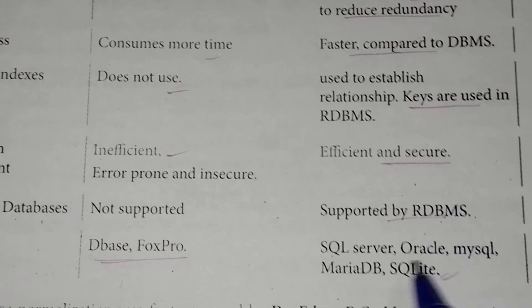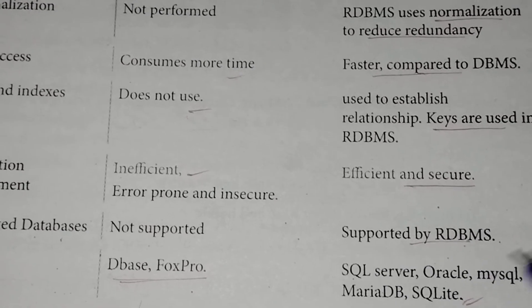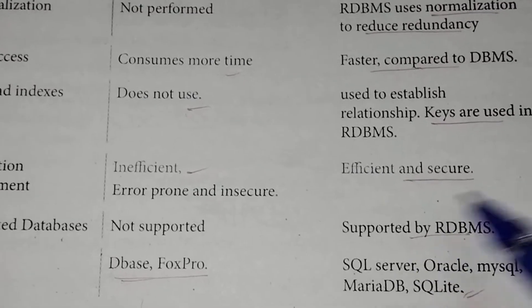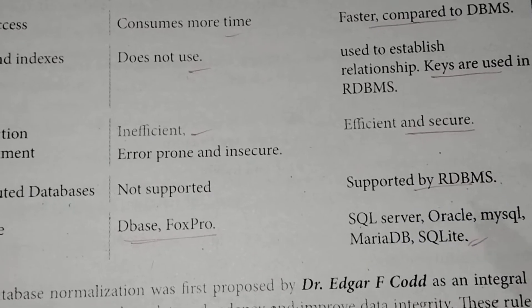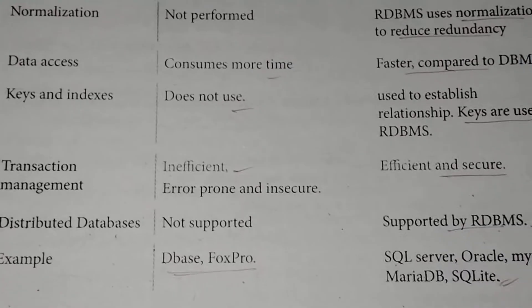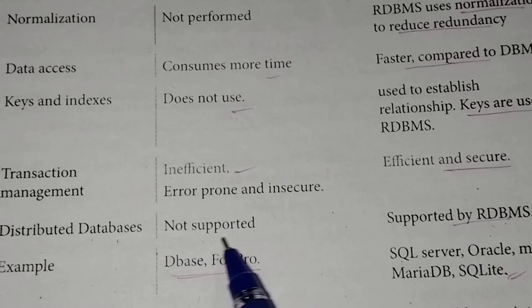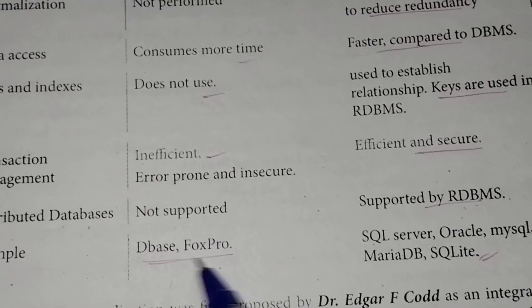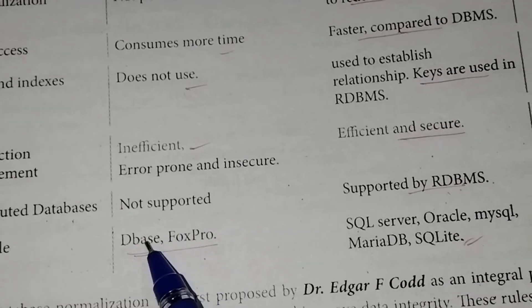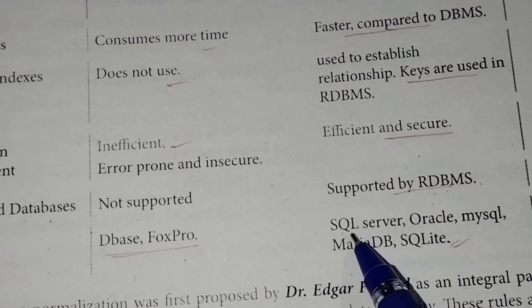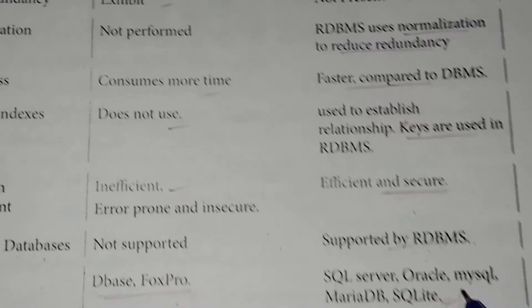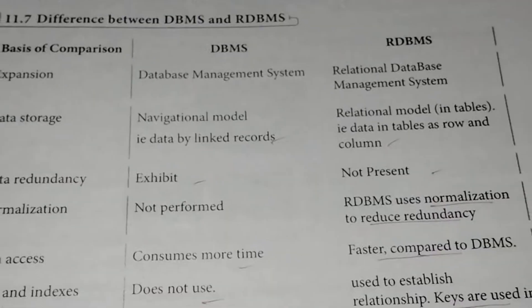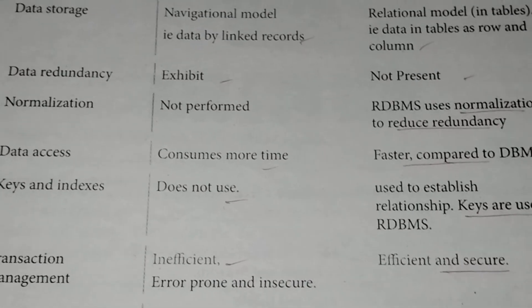Distributed Databases: DBMS does not support distributed databases. RDBMS supports distributing data across 2-3 connected tables with one-to-one data relationships. Examples of DBMS include FoxPro, while RDBMS examples include SQL Server, Oracle, MySQL, MariaDB, and SQLite. This is the difference between DBMS and RDBMS. Thank you.